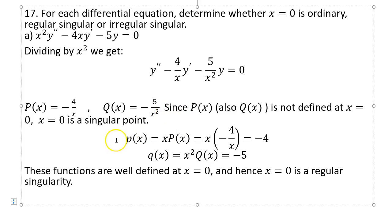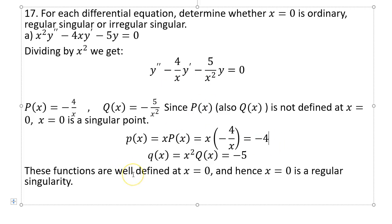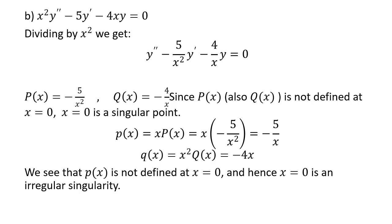Now how do you know if it's a regular singular or irregular singular? You define lowercase p(x) as x times capital P(x) — you multiply x to that term — and for lowercase q(x) you multiply x squared to that term. If those are well-defined at x equal to 0, that's a good thing and it means it's a regular singular point.